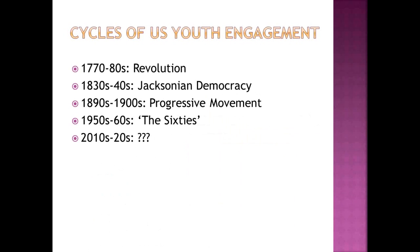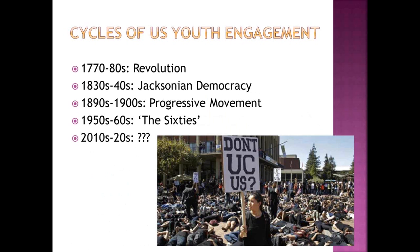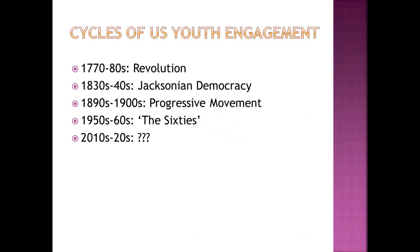One example from UC Berkeley today: the die-ins that followed both the Michael Brown and Eric Garner killings, and we're seeing more of the same after the tragic event just a couple of days ago in North Charleston, South Carolina. One possible explanation — or one part of a complex multivariate explanation — is that we see a cyclical nature to youth engagement back over 250 years, and we may be right on cue today.